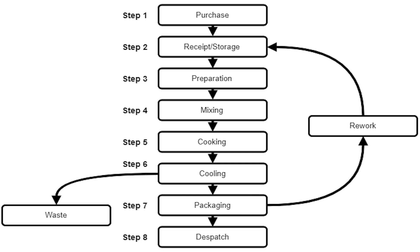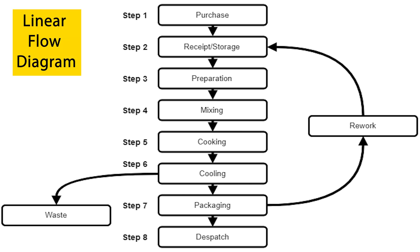There are two popular methods of making a flow diagram. One of the most popular is a linear flow diagram, which is a straightforward representation of the process in a single line, starting with purchasing or receiving the raw material all the way to the final product dispatch — as you can see on your screen. In all flow diagrams, we need to make sure that the stages where rework or waste are being generated are also present in the flow diagram.